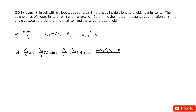We have two solenoids, and we need to determine the inductance as a function of theta. This is the angle between the planes of the two solenoids. For the second solenoid, we know it's N2 and A2. For the first solenoid, we know it's N1 and A1. The length is L.